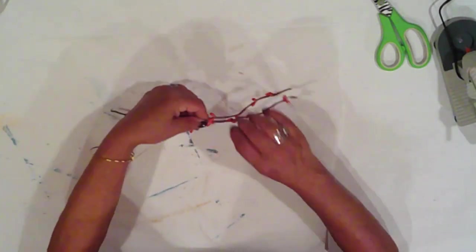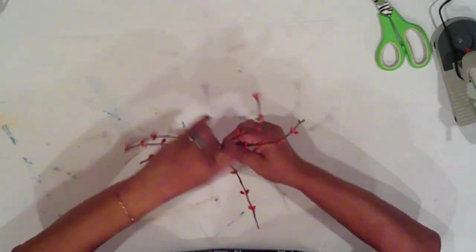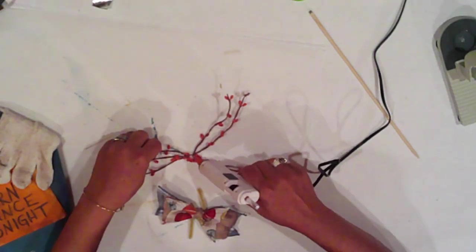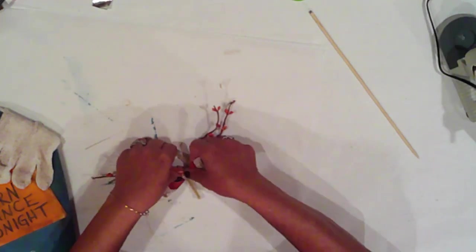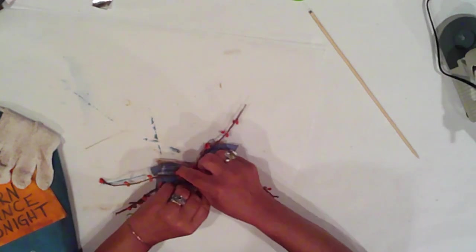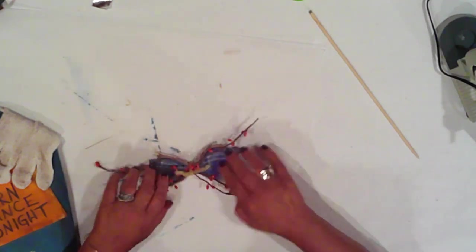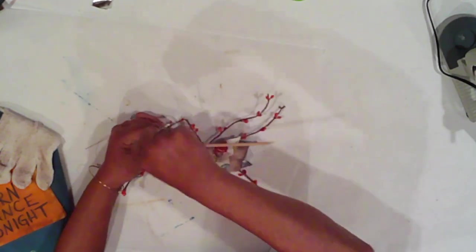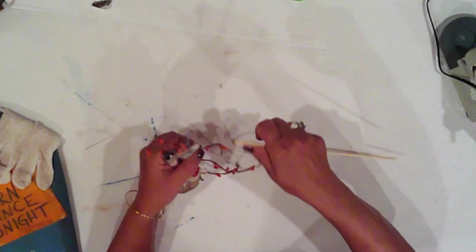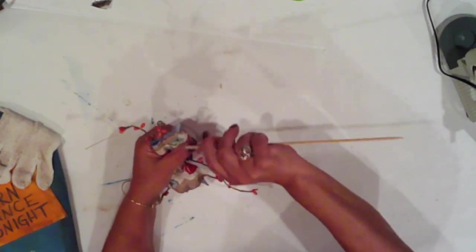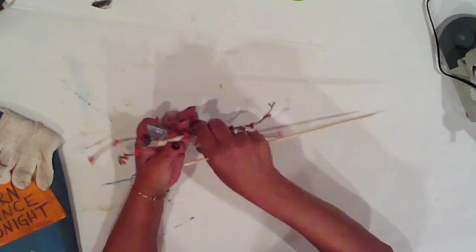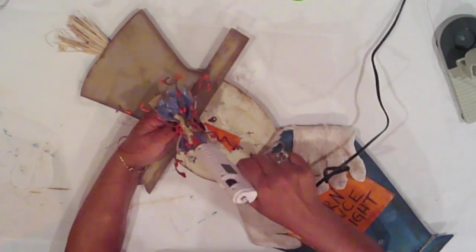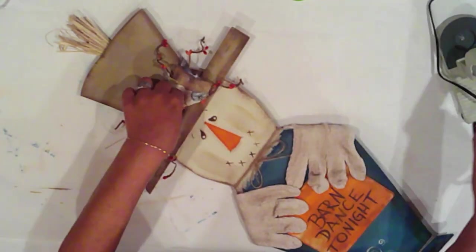I twist three stems of pip berries together at their center. Add a dollop of hot glue, then I'll tie on my bow. I'm wrapping my berry stems around a skewer to give them a little bit of curl. And I'll glue my bow just above the brim of the hat.